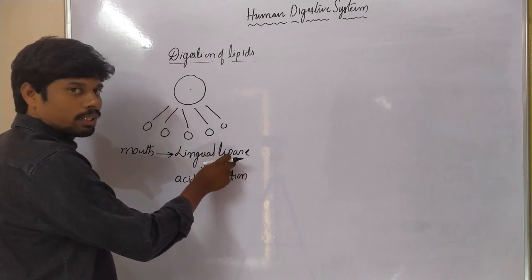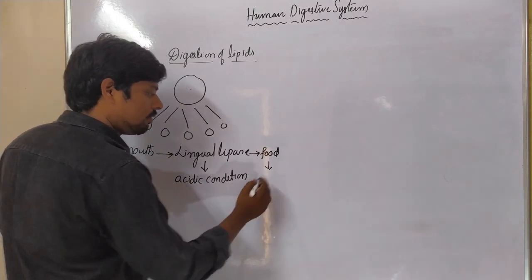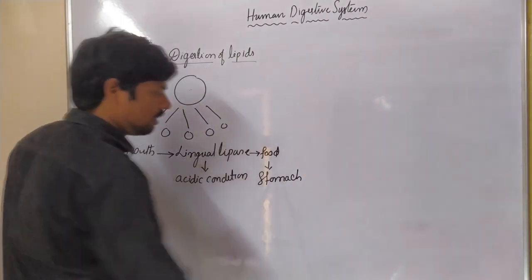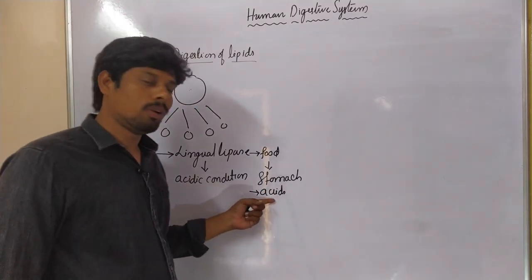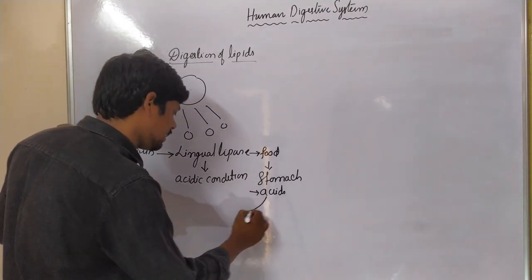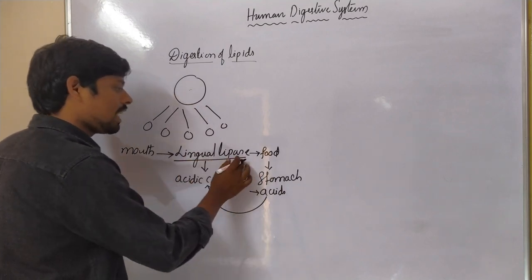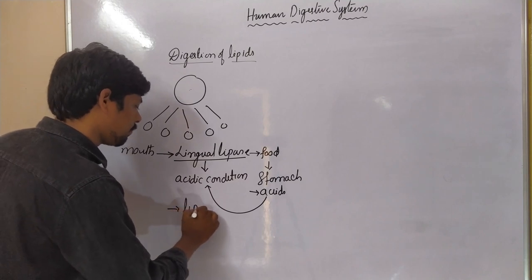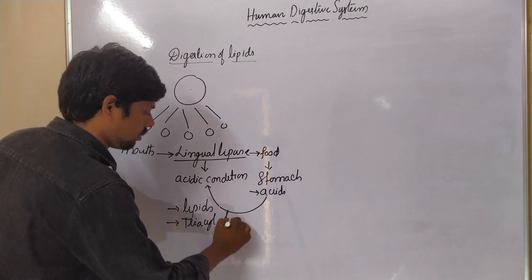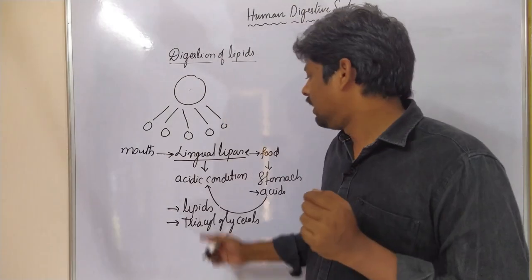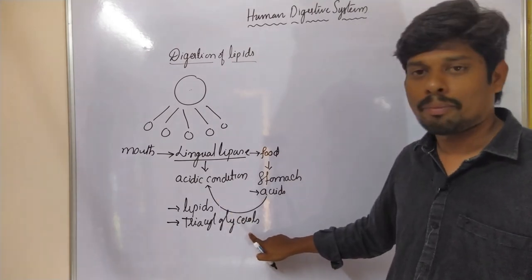That is why lingual lipase, which is produced by the mouth, does not act on lipids present in the mouth. Instead, lingual lipase mixes with the food and enters the stomach. The stomach produces acids, creating an acidic condition. So lingual lipase is activated in the stomach, where it acts on lipids — especially triacylglycerol.